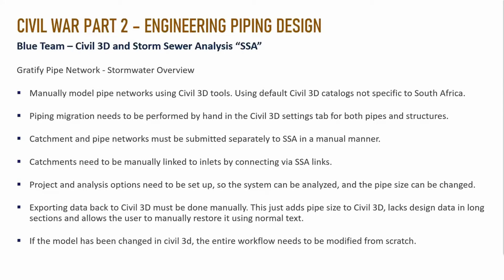In the storm sewer analysis workflow, you export all of your pipes into the SSA and do your actual analysis. For gravity pipe networks, we need to first manually model the pipe networks using Civil 3D tools. One key defect is that the pipe network catalogs that come with it are not South African standard-based, which is very problematic because you need these things to be as accurate as possible to real life.